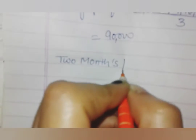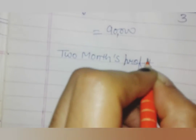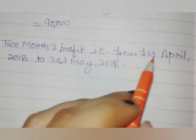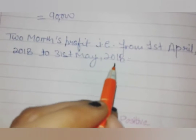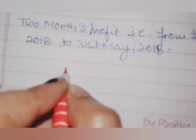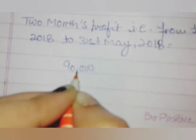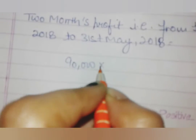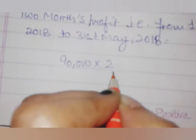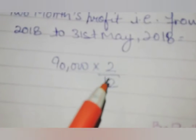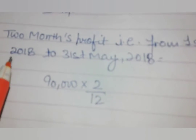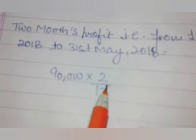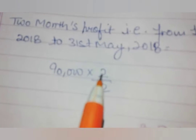Next, we calculate 2 months profit — that is from 1st April 2018 to 31st May 2018. How many months have passed from 1st April 2018 to 31st May 2018? That is 2. That is why we write 2 over 12, as there are 12 months in a whole year.